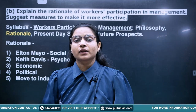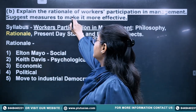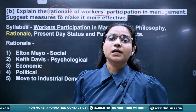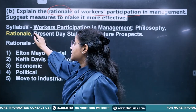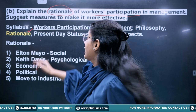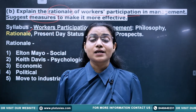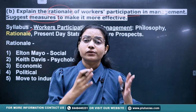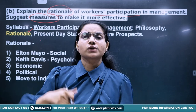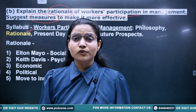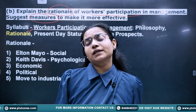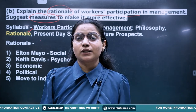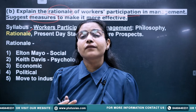The second part of question 6 asks: explain the rationale of workers' participation in management (WPM). This question has been asked many times in previous years and is directly mentioned in the syllabus. From the term itself, WPM means making workers participate in management — they contribute suggestions and give ideas. Workers who know the ground reality can improve policy making.